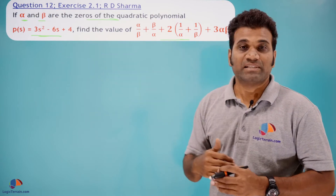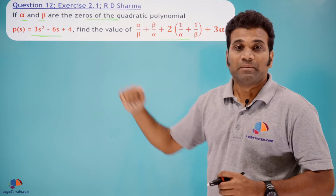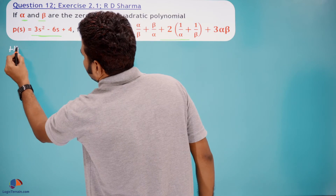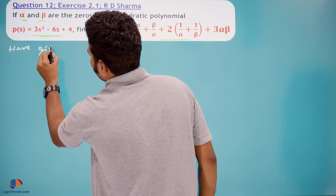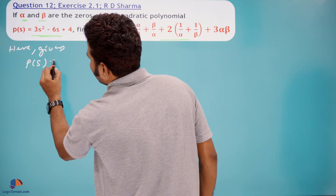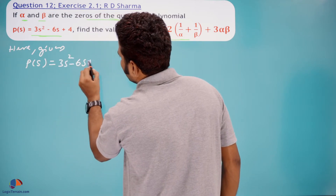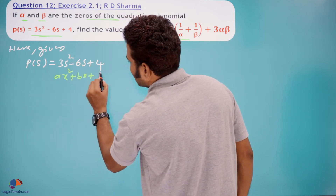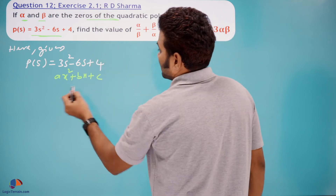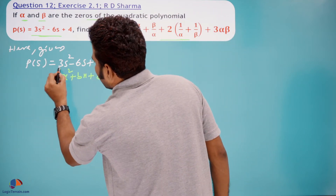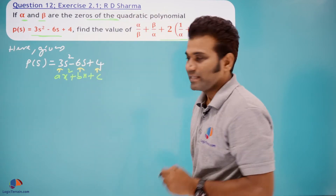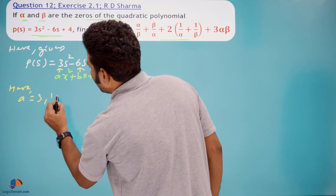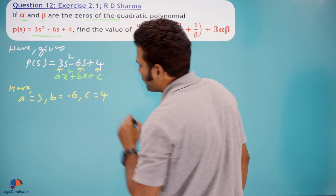We will take the given polynomial and find its coefficients by comparing with the general form of a quadratic polynomial. Given p(s) = 3s² − 6s + 4, comparing with the general form ax² + bx + c, we identify: a = 3, b = −6, and c = 4.